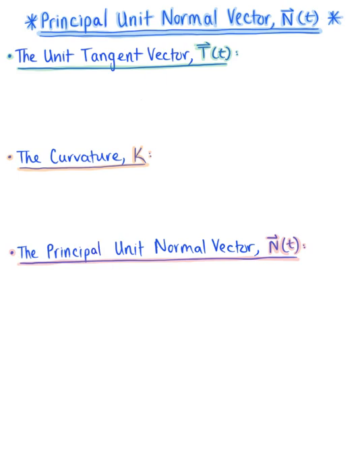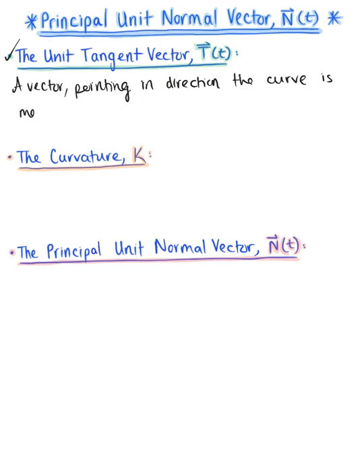We are ready now to talk about the principal unit normal vector and how it relates to what we know. Quick recap: the unit tangent vector is a vector of length 1 pointing in the direction the curve is moving at any point on the curve. We define this as capital vector T of our arbitrary parameter t.